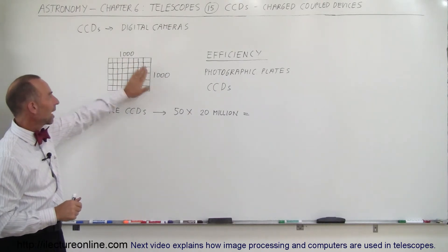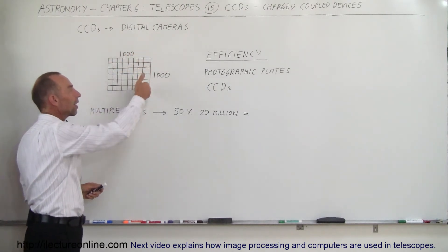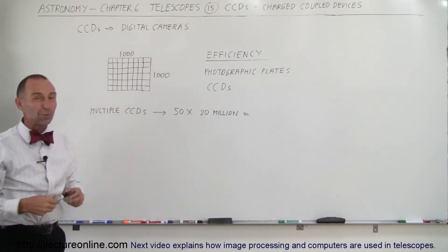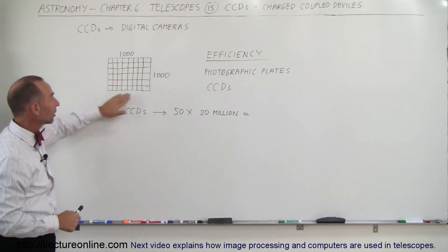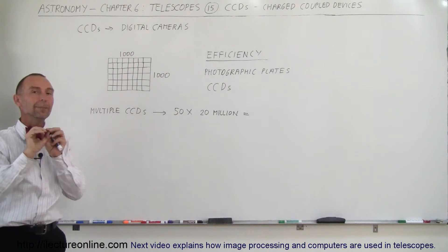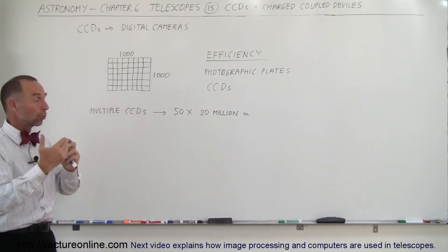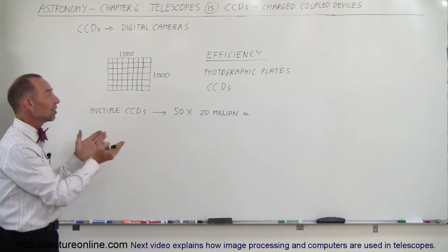Here's an example of a digital array of pixels, as many as a thousand by a thousand. When you multiply those, that would be 1 million pixels on this one little chip, and each individual pixel can independently store a certain amount of light that they receive through a lens and then store that image into a computer.